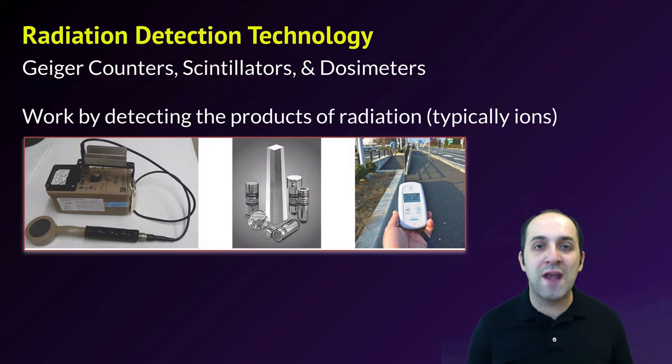We're all familiar with Geiger counters from science fiction where people in yellow suits show up and they have their Geiger counters and they start clicking when they go near their radioactive source or the person in some cases. These work by detecting the products of radiation, generally ions. So usually there's some sort of sample of an inert gas in a Geiger counter or in a scintillator. As that inert material interacts with the radiation, it produces ions, which are then detected and expressed electrically, usually through clicking or through a readout on a dosimeter.